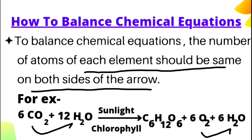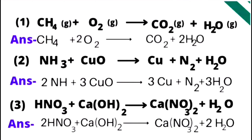For example, photosynthesis ki reaction li gayi hai. Yahan aap dekh rahe hain ki CO2 (carbon dioxide) water se react kar rahi hai in the presence of sunlight, aur glucose, oxygen, aur water ban rahe hain. Yahan aap dekh sakte hain ki jitne bhi atoms involved hain — jaise carbon ke six hain left side par, toh right side par bhi carbon ke six hi hain. Dono taraf jitne bhi atoms involved hue hain woh same hain, toh yeh ek balanced chemical equation ka example hai.